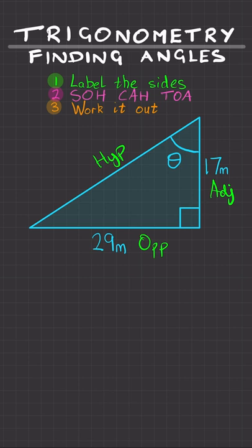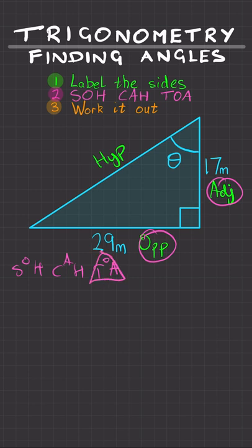Step 2: SOHCAHTOA. Let's write SOHCAHTOA out. Which one do we need? Well, we've got information on the opposite and the adjacent side. So opposite and adjacent, that's the tan function.